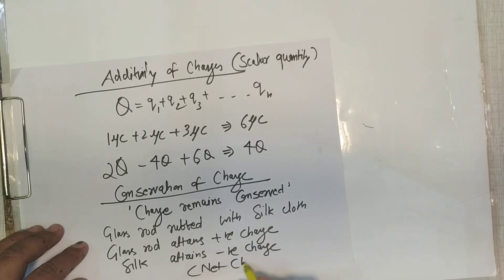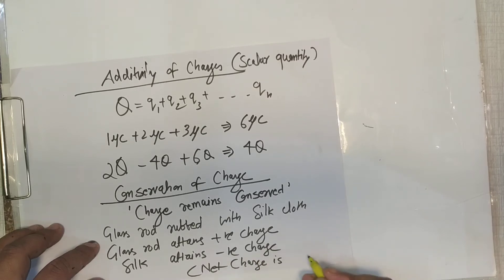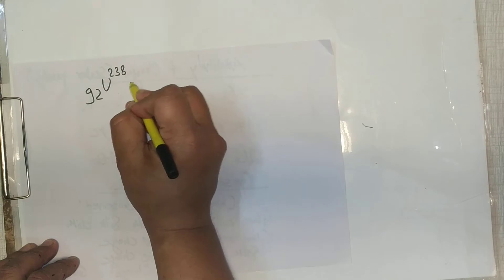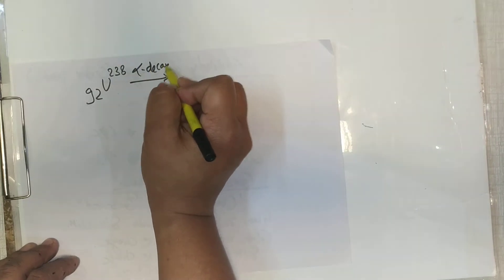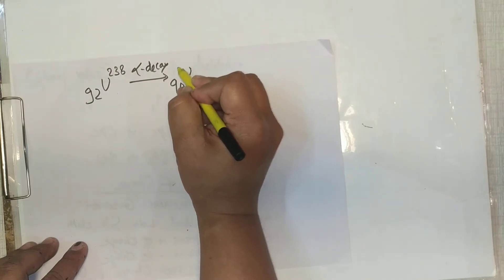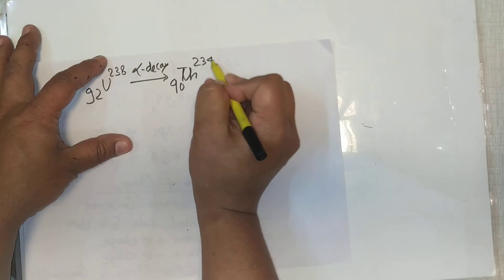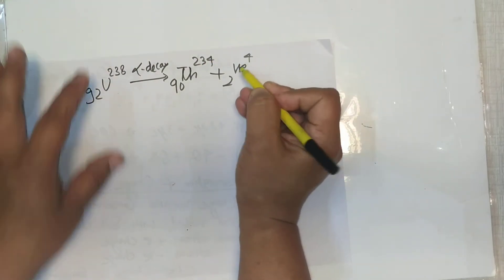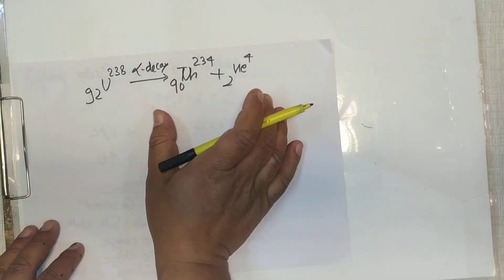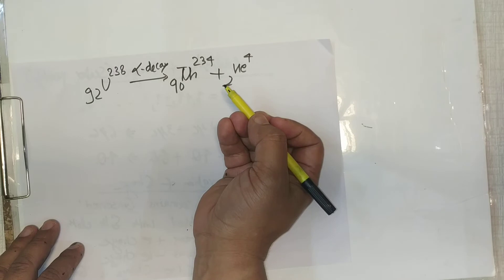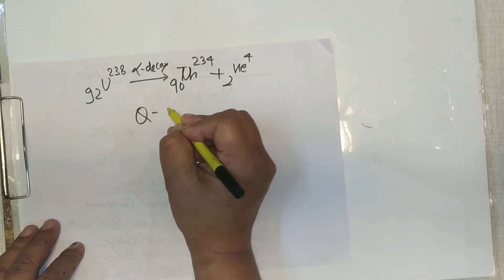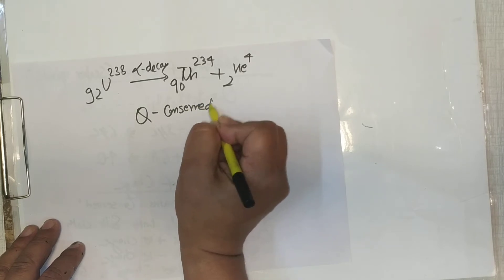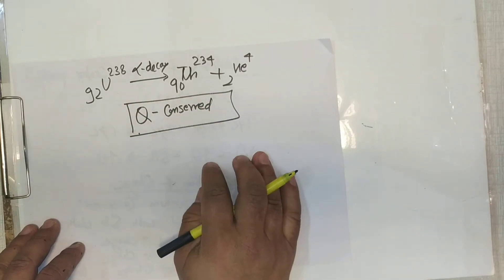Another example of conservation is alpha decay: Uranium-238 (₉₂U²³⁸) breaks down into Thorium-234 (₉₀Th²³⁴) plus a helium particle. The atomic number is conserved, meaning the total charge before and after the decay remains the same. This confirms that charge remains conserved.